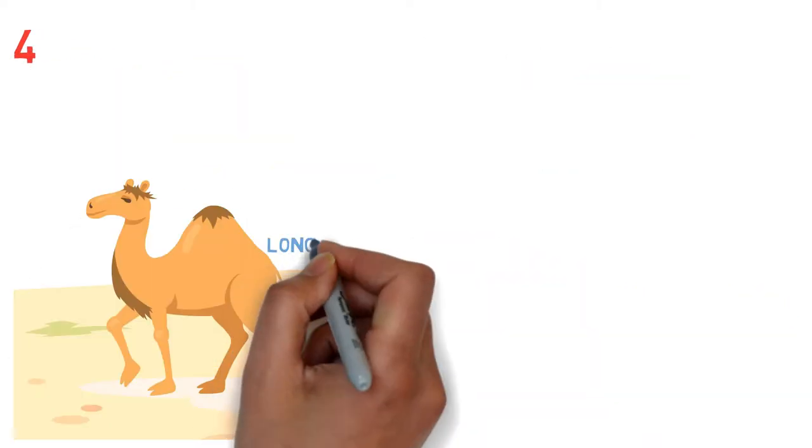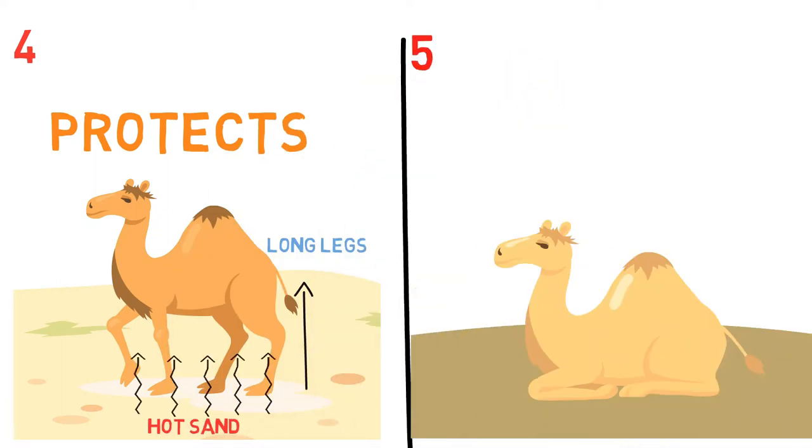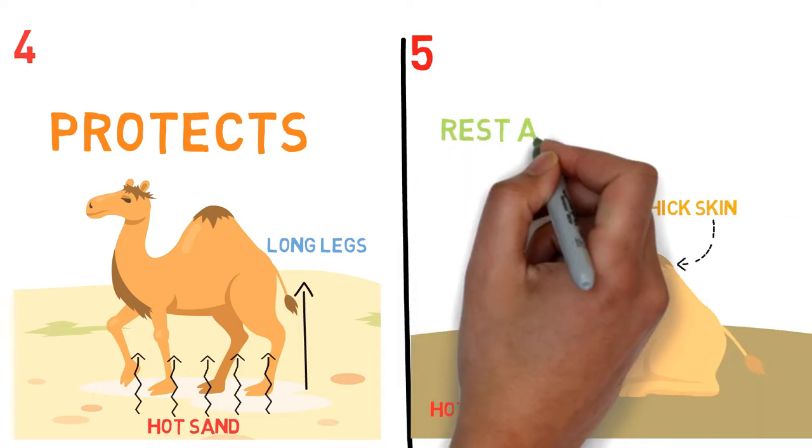4. A camel has long legs which protect its body from the hot sand. 5. A camel has thick skin in order not to burn its body when lying on hot sand to rest or during its birth.